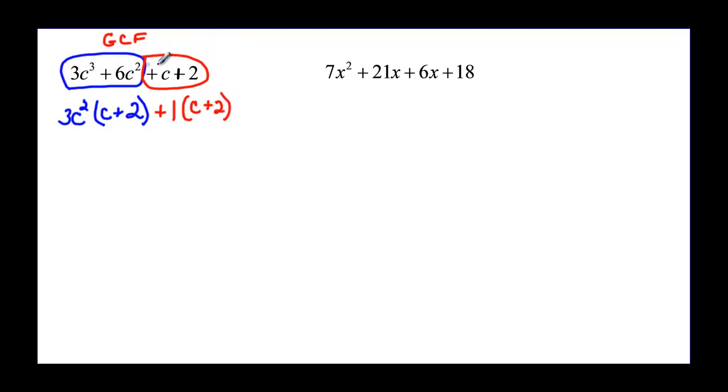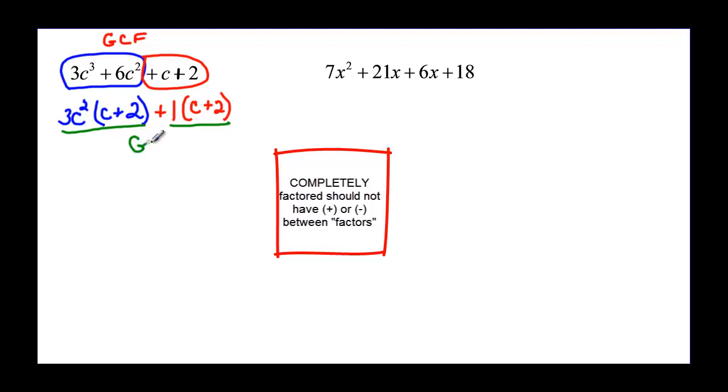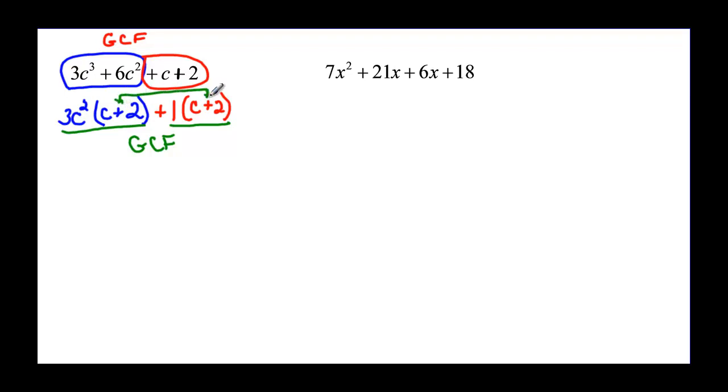Now we've factored the first two and the last two terms, but we still have two terms. We're not factored yet. When you see this plus in the middle of your terms, you still have terms, you're not factored. So I have to find the greatest common factor again, and if we did it right, it should be obvious that it's going to be this thing in the parentheses.